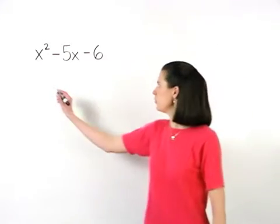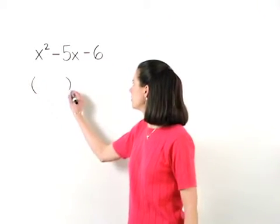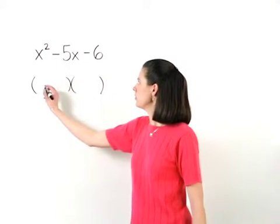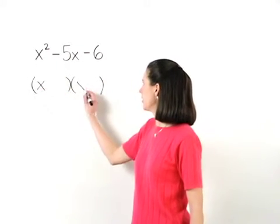So starting with our two sets of parentheses, x squared factors as x times x.